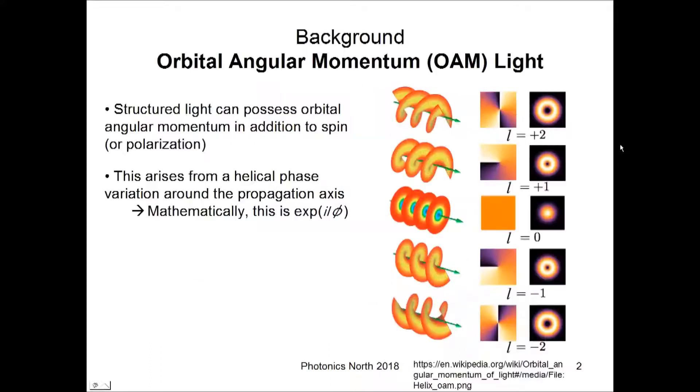A cylindrical vector beam is a type of structured light, and one important property that structured light has is that it can possess orbital angular momentum, or OAM, in addition to its spin or polarization.